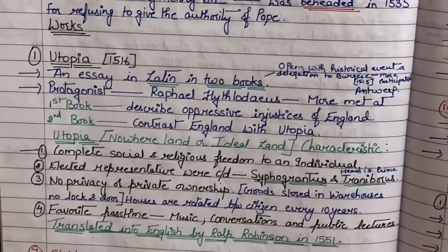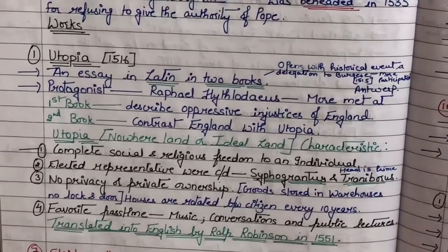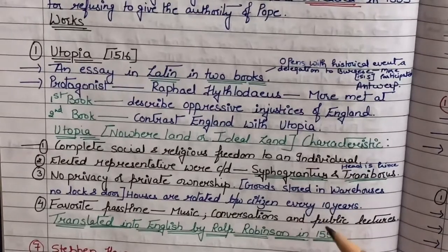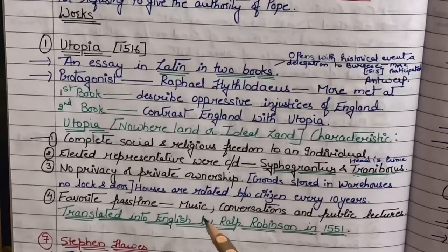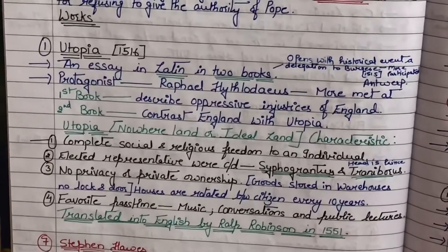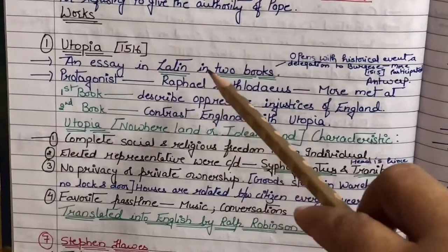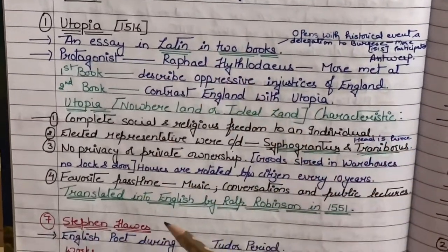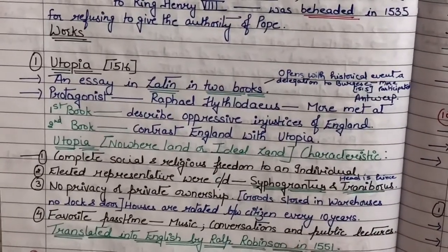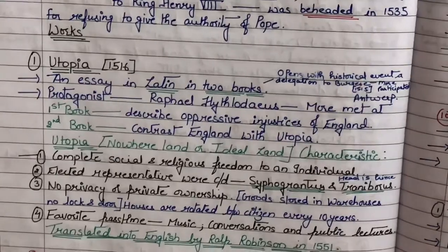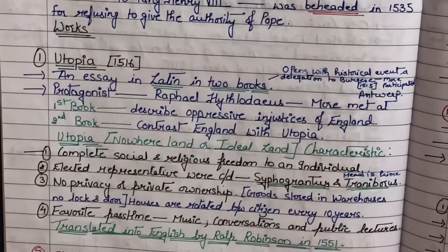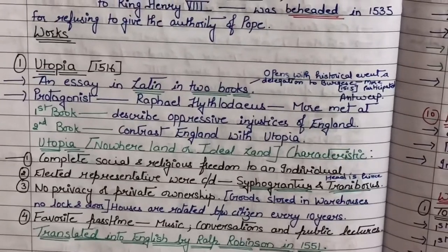Fourth, and this is the most important point — because this question also frequently appears in exams: which was the favorite pastime of Utopian land? The favorite pastime is music, conversations, and public lectures. Now, Utopia was written in Latin. It was translated into English by Ralph Robinson in the year 1551.